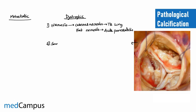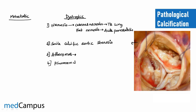Classic examples of dystrophic calcification are TB lung and acute pancreatitis. Another example is senile calcific aortic stenosis, as depicted in the image. Atheromas in atherosclerotic plaques also show calcific depositions in chronic cases. A fourth very important example is psammoma bodies, which are seen in papillary carcinomas and represent dystrophic calcification.